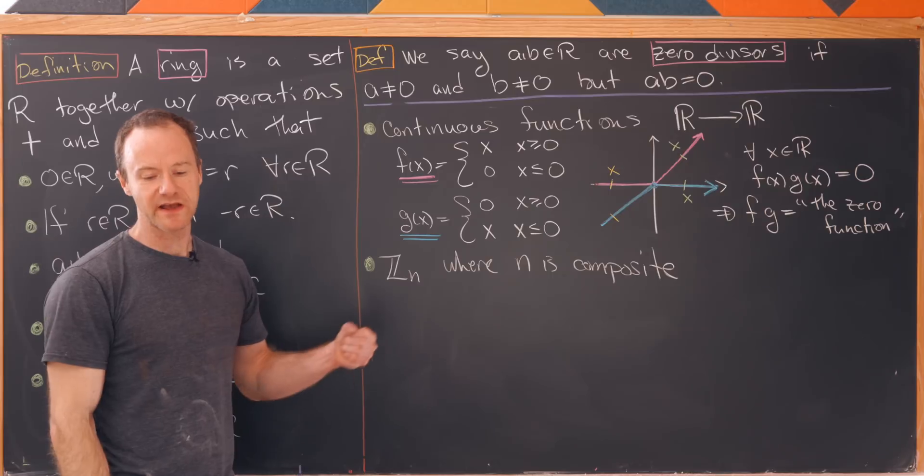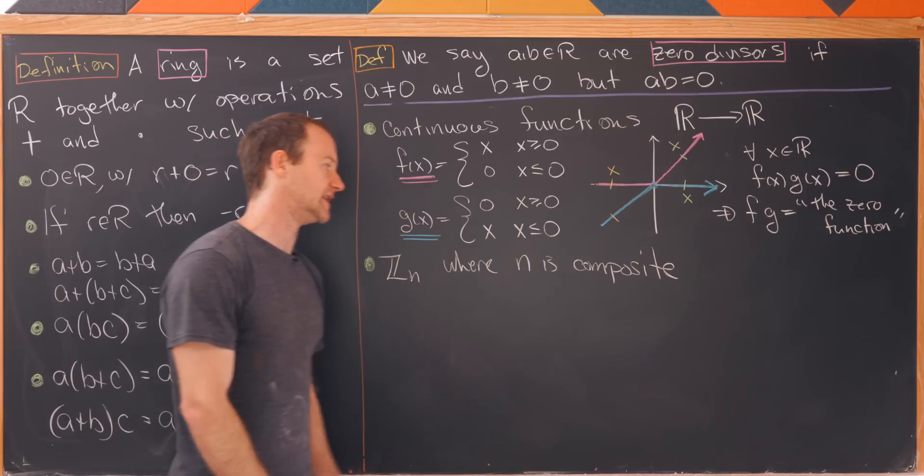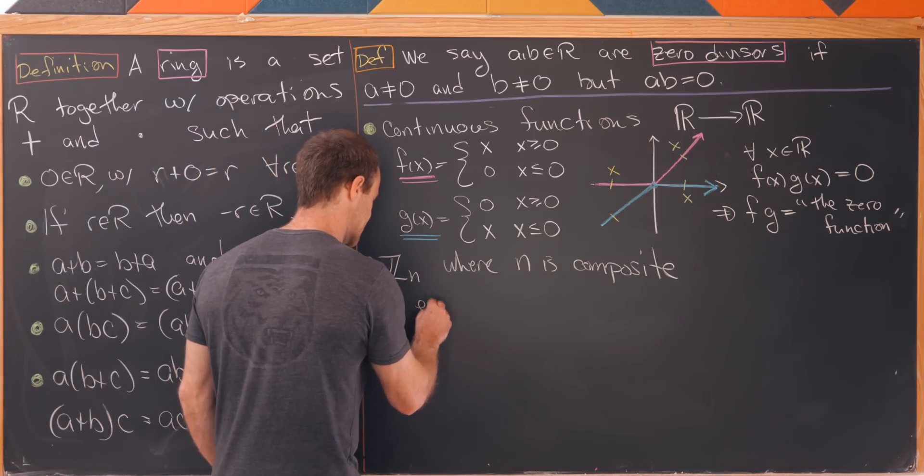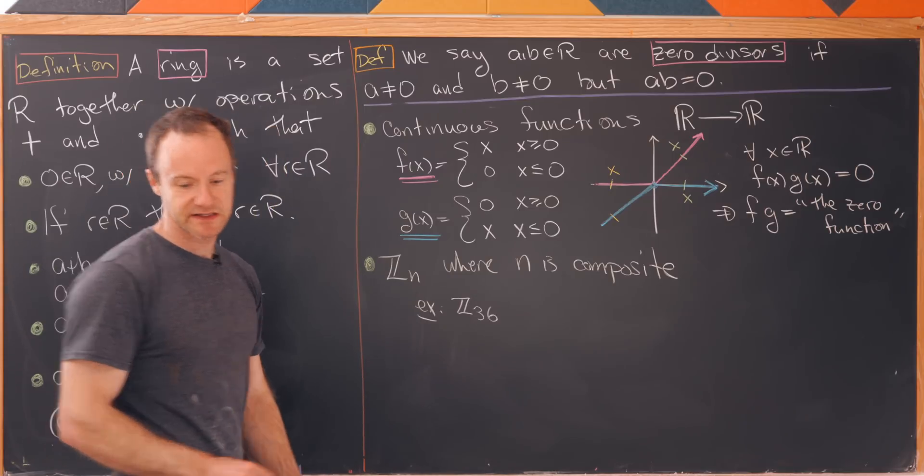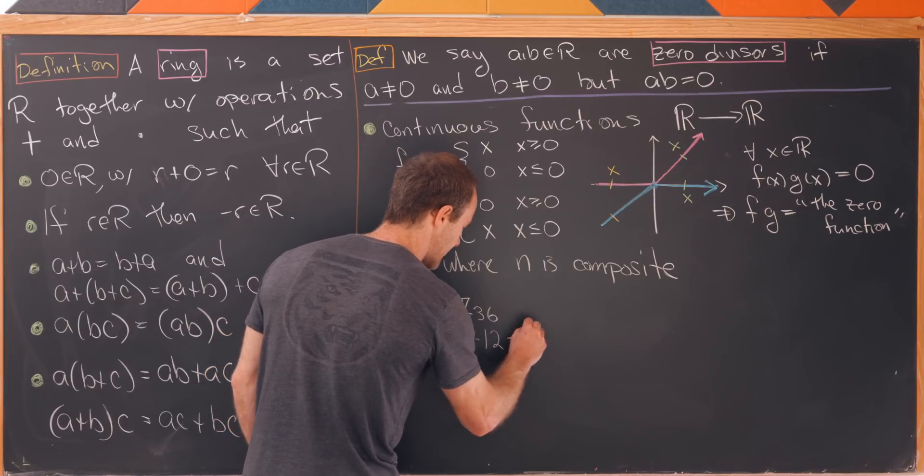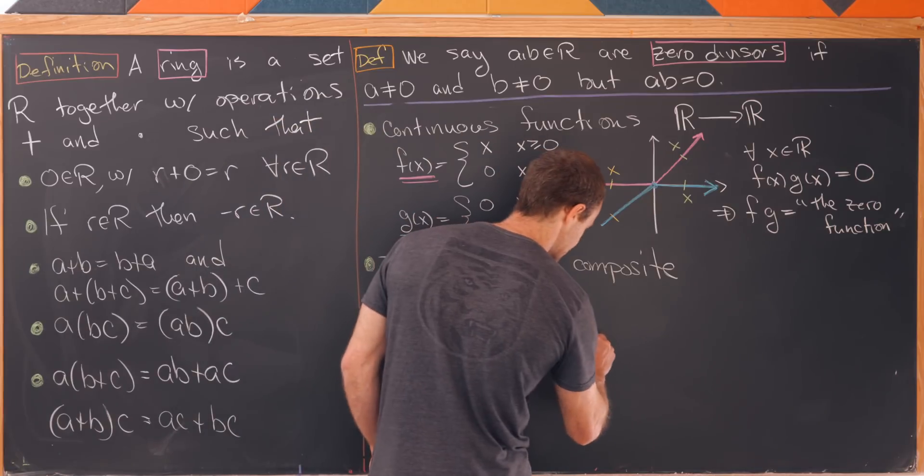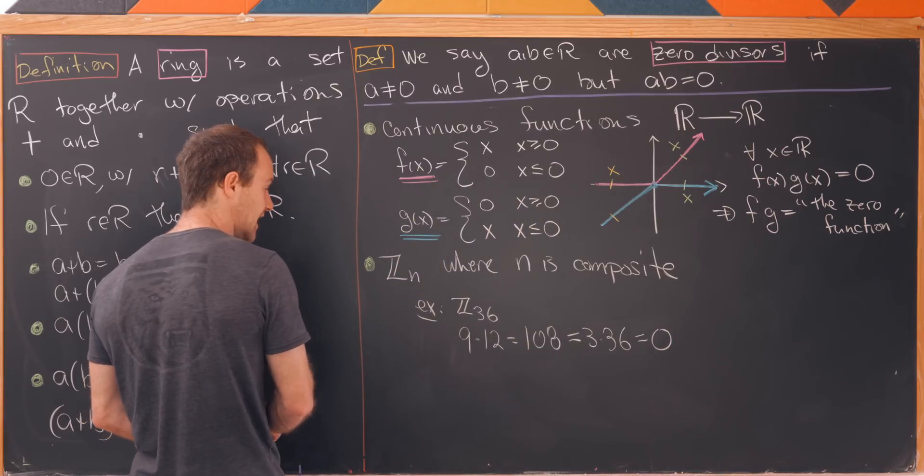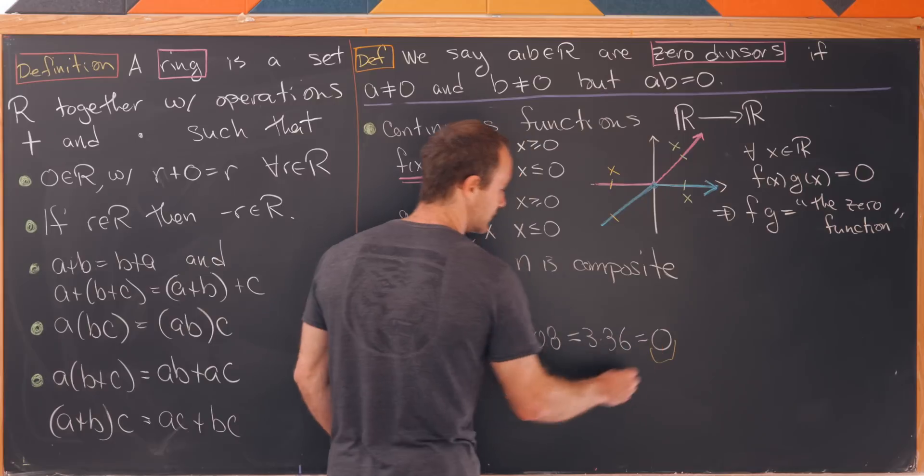Okay so for our last example we're going to look at Z mod n where n is composite. We'll do this by example. So for example let's look inside of Z_36 and let's notice that 9 times 12, well that's equal to 108 but 108 is the same thing as 3 times 36 which is equal to zero.